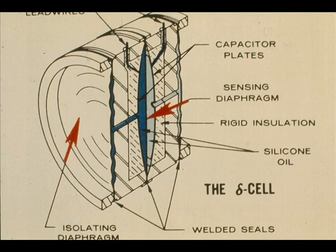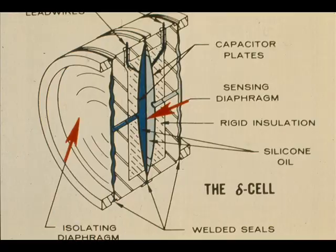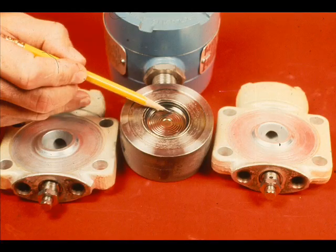The high and low pressure sides are filled with silicon oil out to the isolating diaphragms. The sensing diaphragm isolates the high and low pressure fills. The isolating diaphragms isolate the process fluid from the silicon oil.